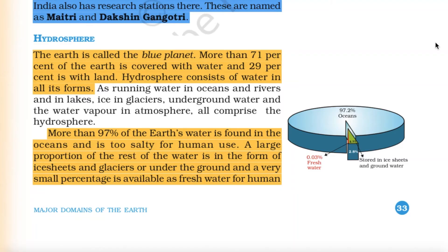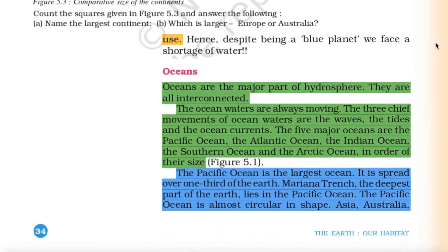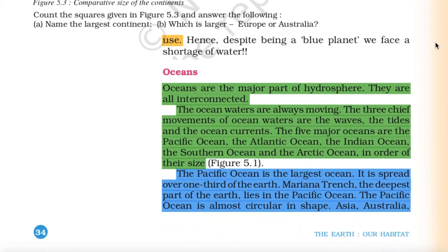A large proportion of the remaining water is in the form of ice sheets and glaciers or underground, and only a very small percentage is available as fresh water for human use. Hence, despite being a blue planet, we face a shortage of water.